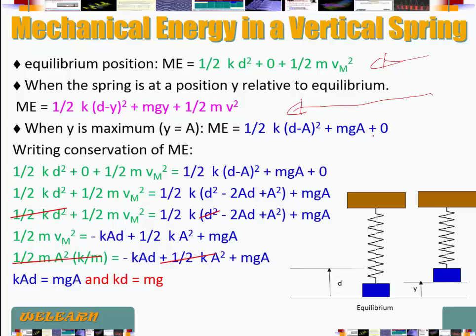When we write conservation of mechanical energy — for example, equating the equilibrium position to the position of maximum displacement — we get: one half of kd squared plus one half of m v_max squared equals one half of k(d − a) squared plus mga.